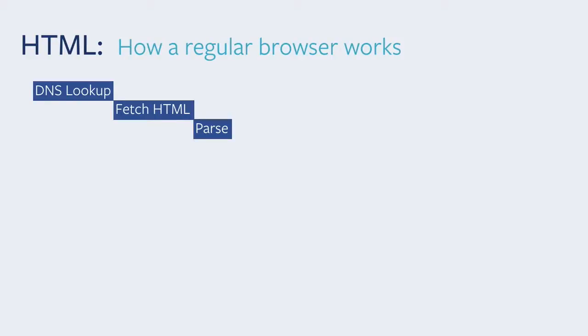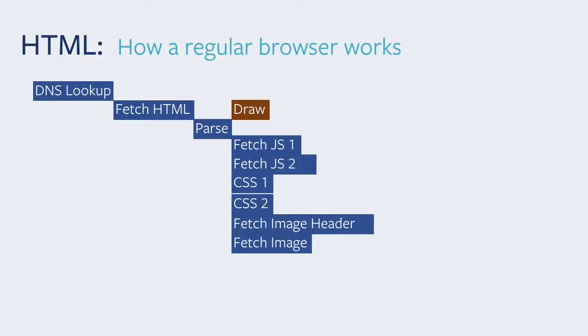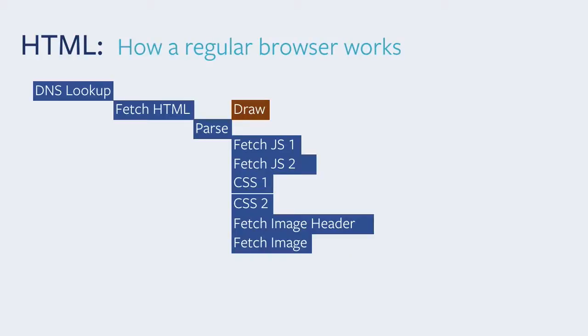Then comes the parse — your browser needs to understand what is going on and starts fetching content like JavaScript links, CSS, and images, for example the image you might have on the header. There's also a draw event when you first load your HTML document. After you've finished fetching all your resources like CSS, another draw event occurs, and you might see pages flickering because if your HTML document is structured so that the CSS changes right after loading, your page is going to flicker a little bit.